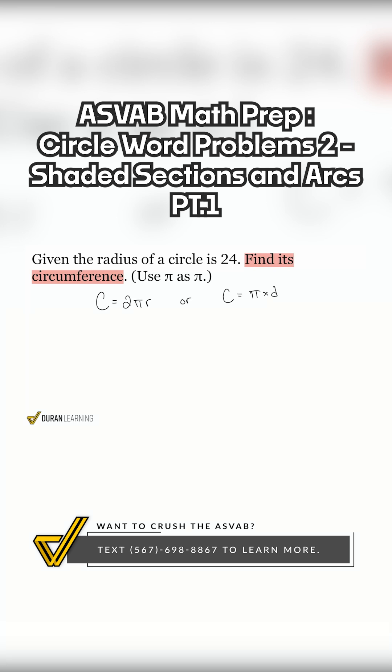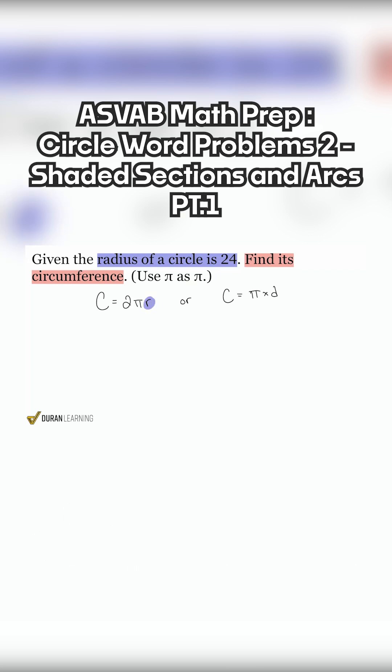We want to choose the formula for which we have the information. So with that said, we are given the radius. The radius is represented by the letter r. So what that tells me is, again, these formulas are the exact same, but given that this one uses the radius, I'll just go ahead and use this formula.